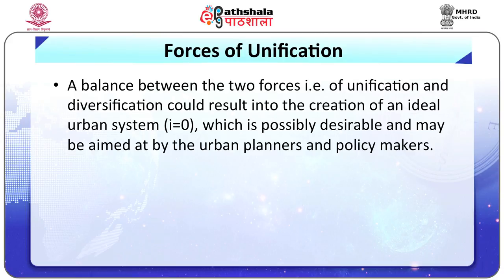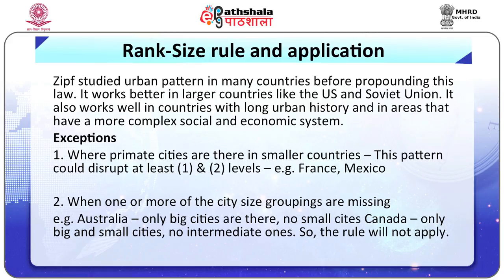A balance between unification and diversification could result in the creation of an ideal urban system, possibly desirable and aimed at by urban planners and policy makers. Zipf studied urban patterns in many countries before propounding this law. It works better in larger countries like the US and Soviet Union, and in countries with long urban history and more complex social and economic systems. Exceptions occur where primacy exists in smaller countries — France and Mexico — disrupting the pattern at least at one or two levels. Another exception is when one or more city size groupings are missing, such as Australia (only big cities, no small cities) or Canada (only big and small cities, no intermediate ones). In these cases the rule does not apply.